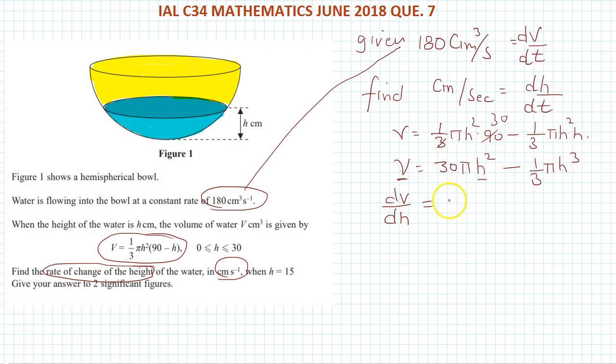So that is equal to 30 times 60 pi H minus 1 over 3 times 3 cancels. It is 1 over 3 pi and H cube is 3 H square. 3 and 3 cancel, so that is pi H, so it is 60 minus H. So this is dV over dH.